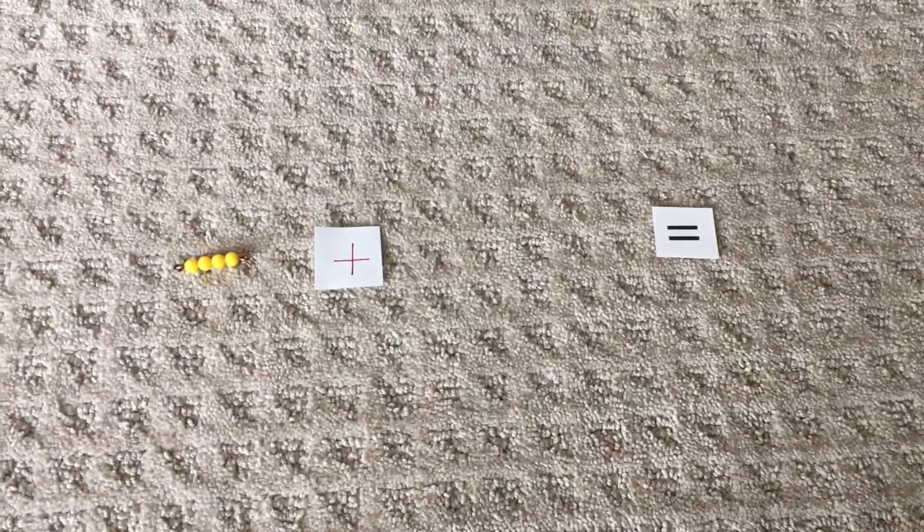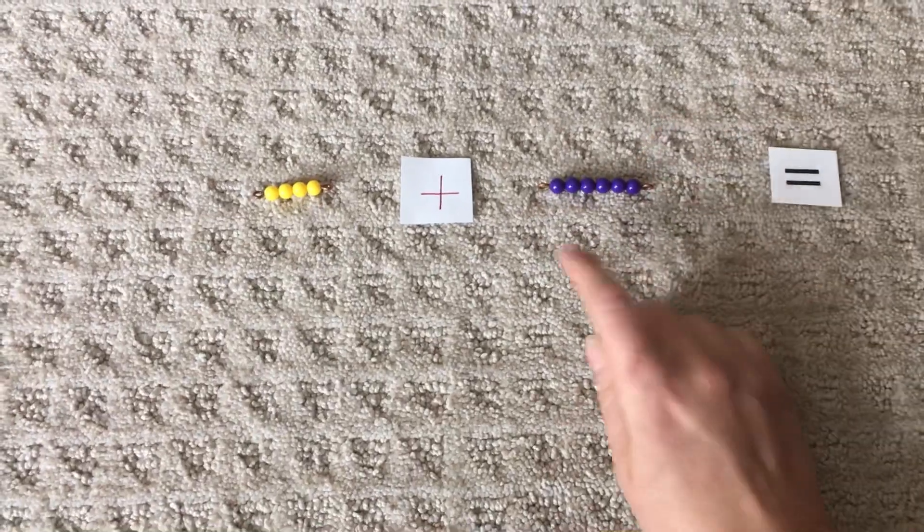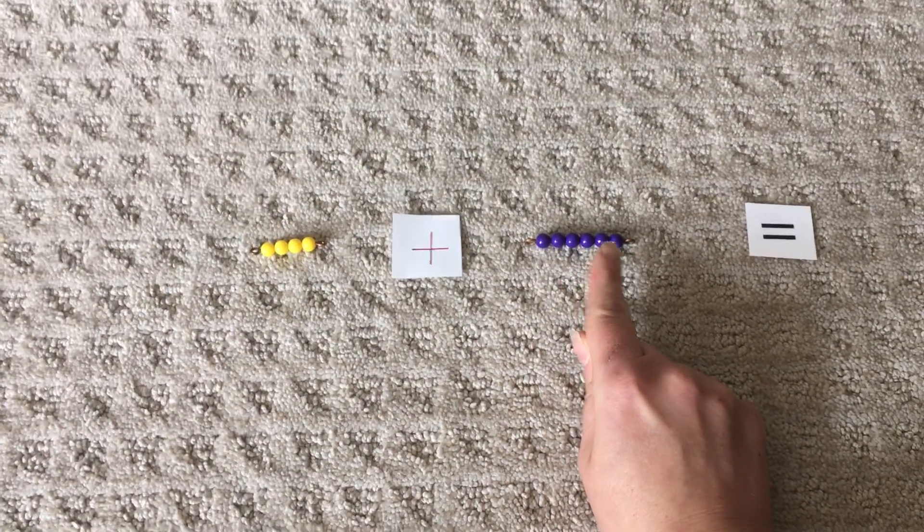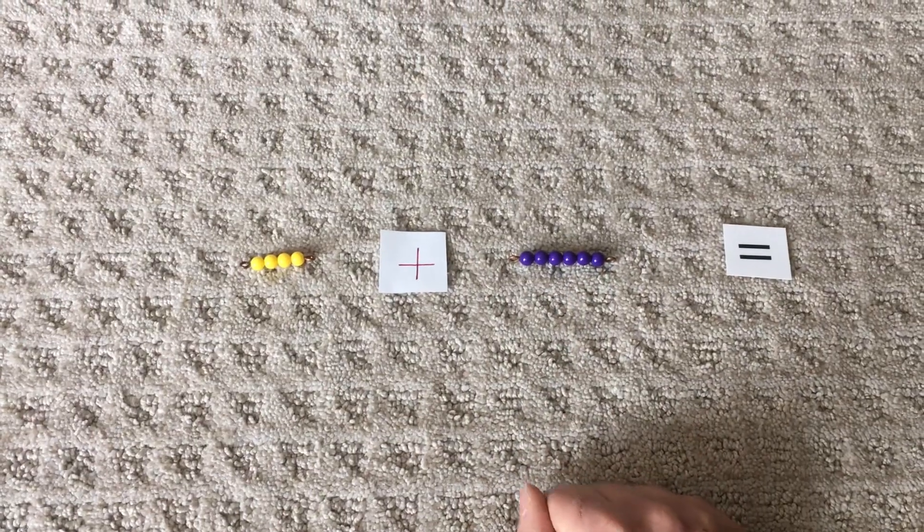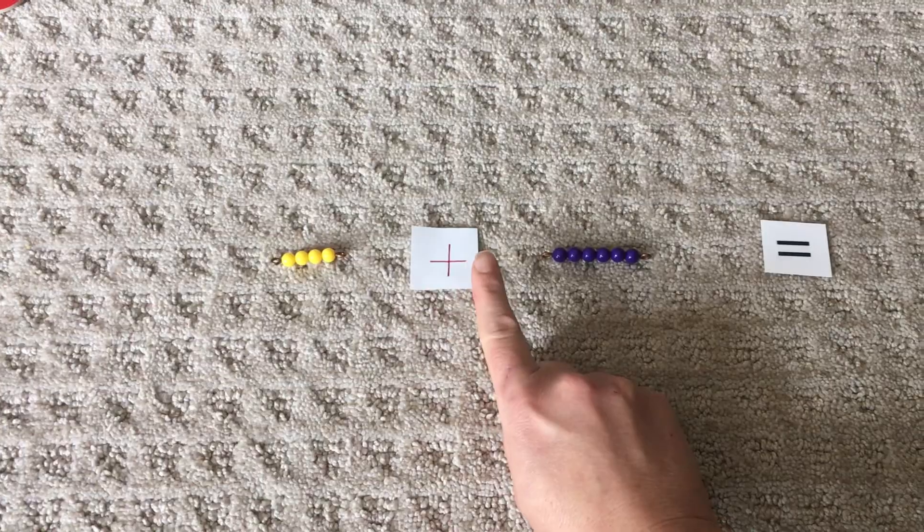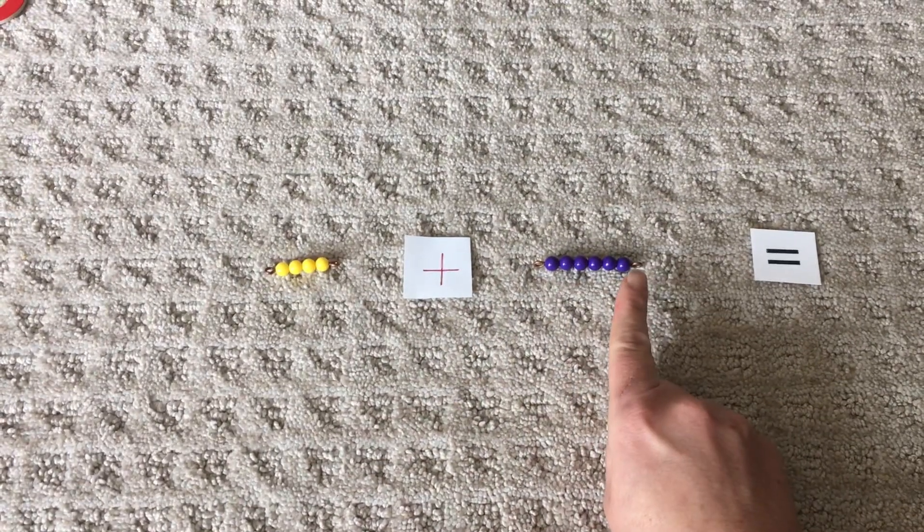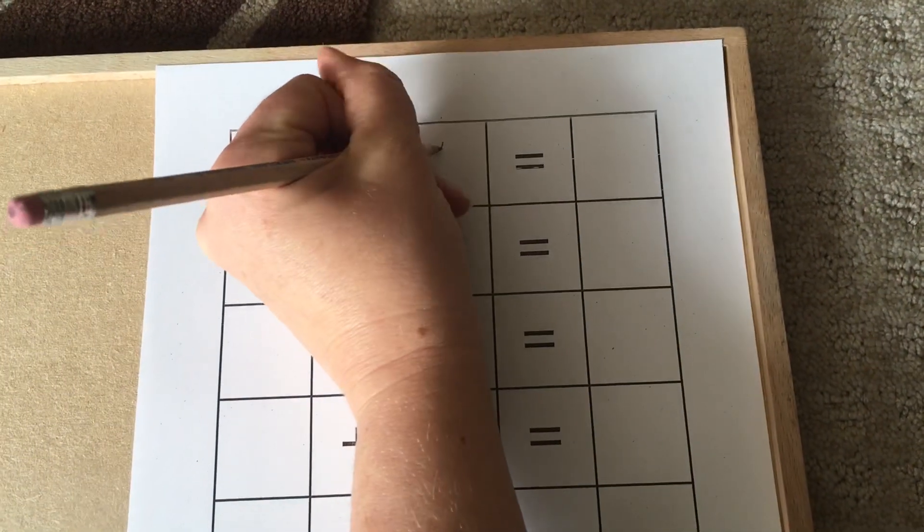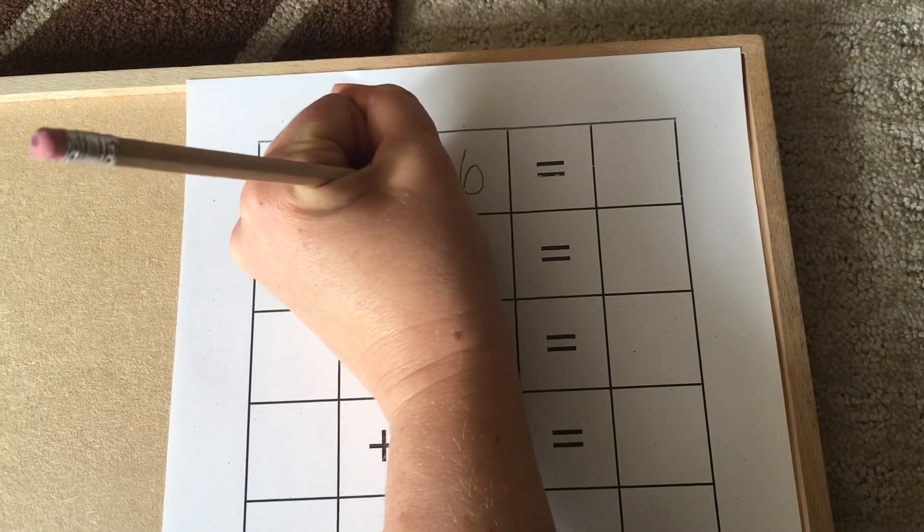Our second number is going to be this one. One, two, three, four, five, six. So we have four plus six. Let's write our number six down, so we don't forget. Six.